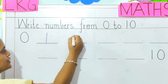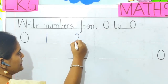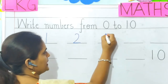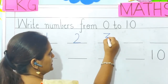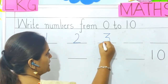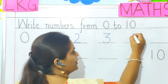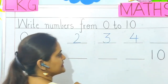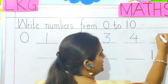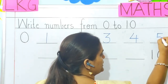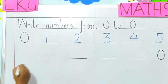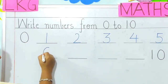So we will write 1 here. Next number 2, so we will write 2 next. After that 3, so write 3 here. Write on the line, children. Next number 4, so we will write 4 next. Next number 5, we will write 5 here.